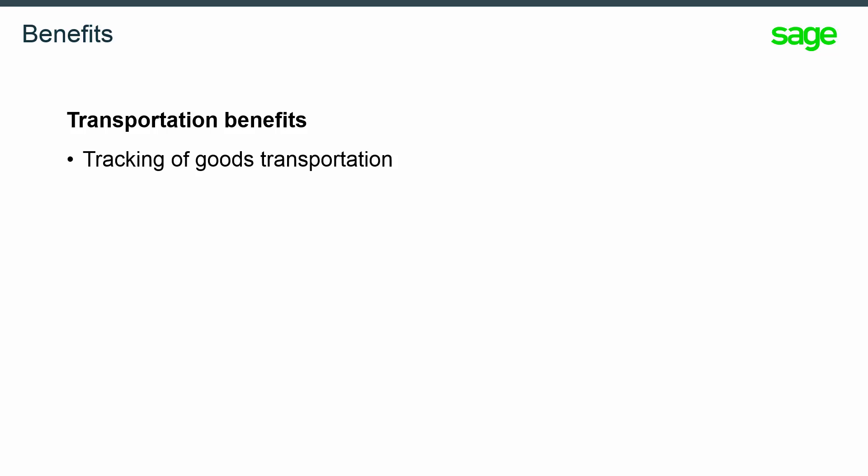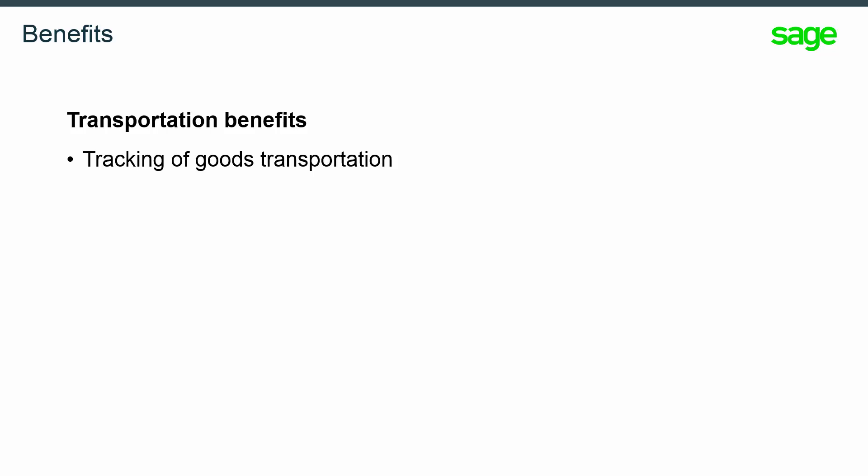Beginning with the transportation process, there are many new benefits. You have the ability to track goods during the transport between suppliers and buyers. You can update the real quantities before the actual receipt and note the real expected receipt date. And finally, using the new pre-receipt feature, you will be able to simplify the receipt entry.